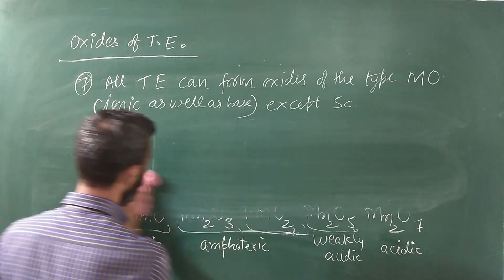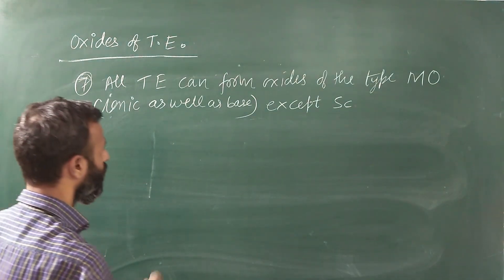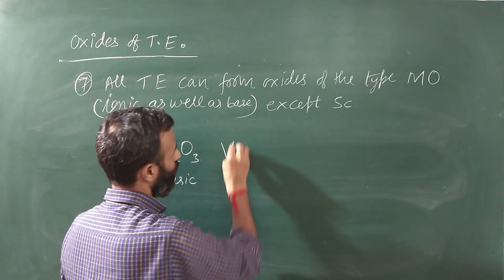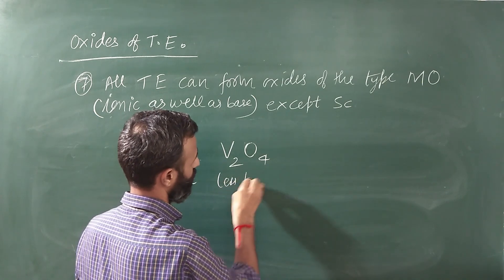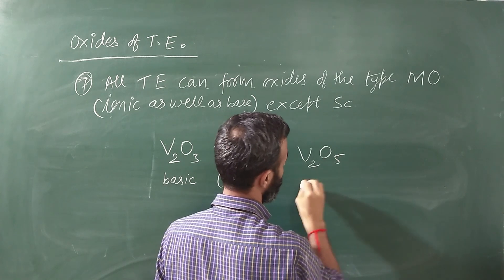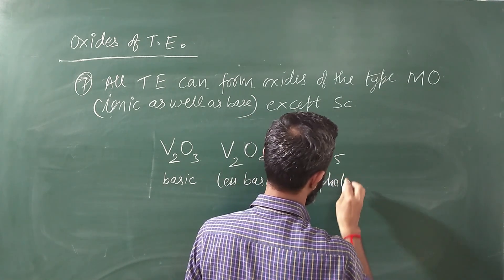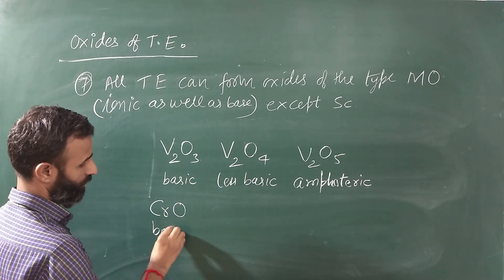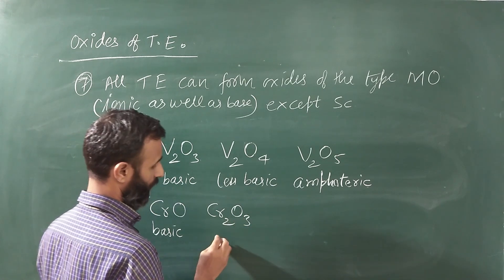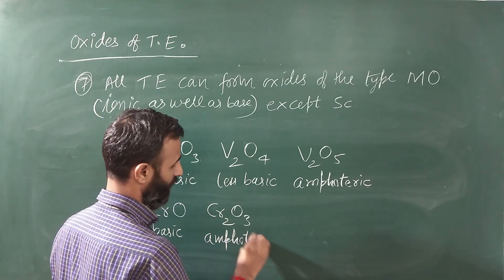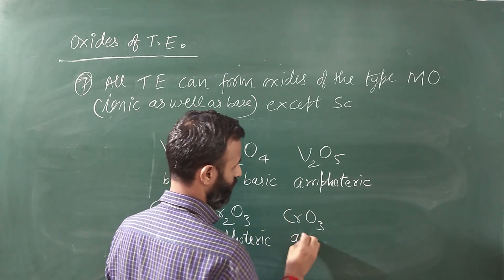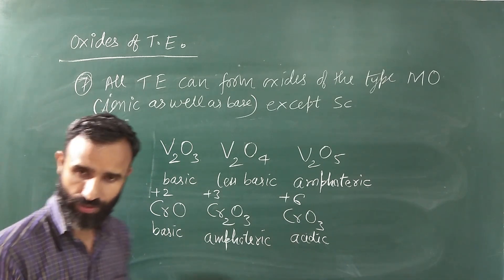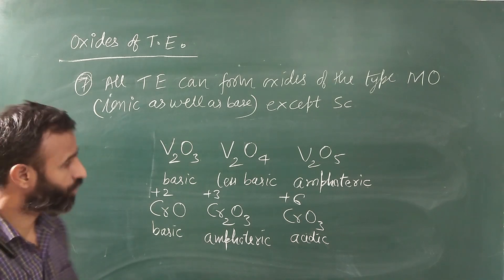If we take vanadium, vanadium can form oxides V2O3 which is basic, V2O4 which is less basic, and V2O5 which is amphoteric. Similarly CrO is basic, then Cr2O3 which becomes amphoteric, and CrO3 which becomes acidic. So oxidation numbers are +2, +3, and +6.